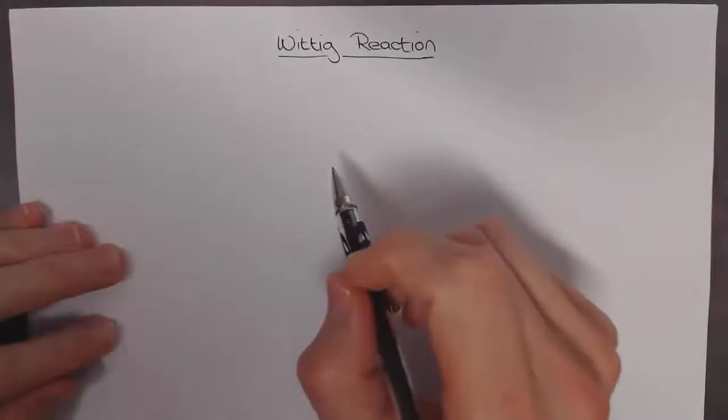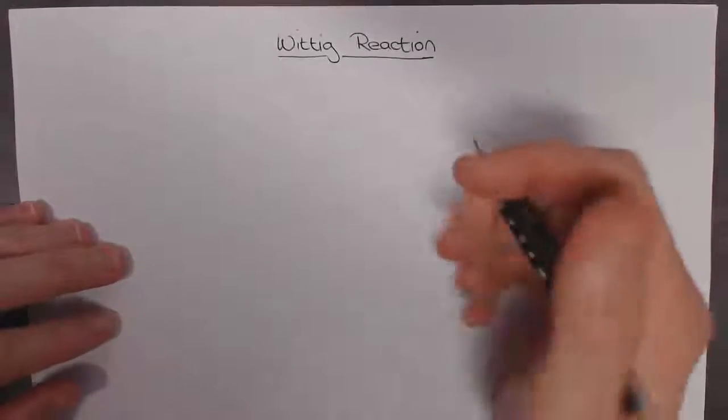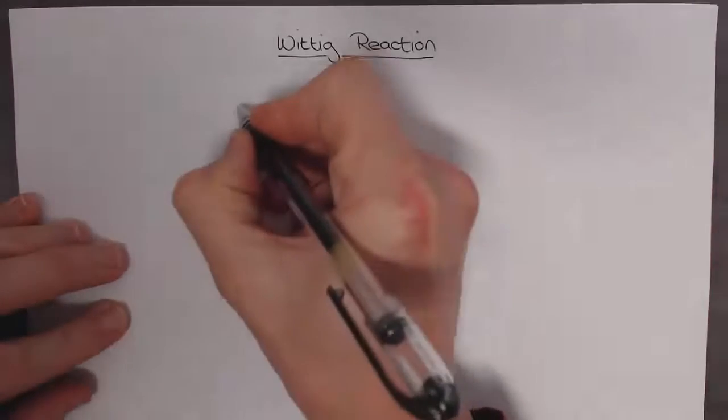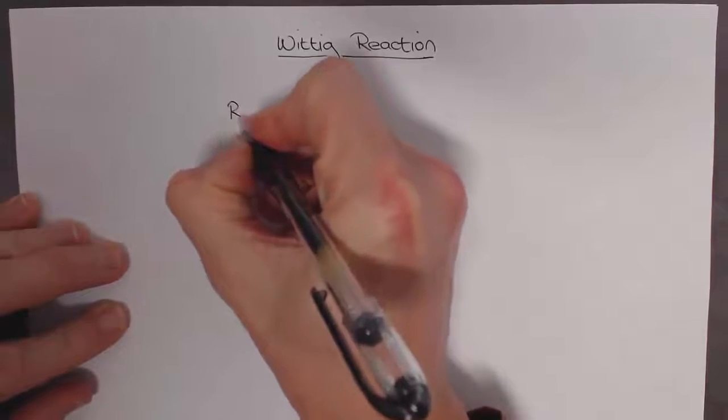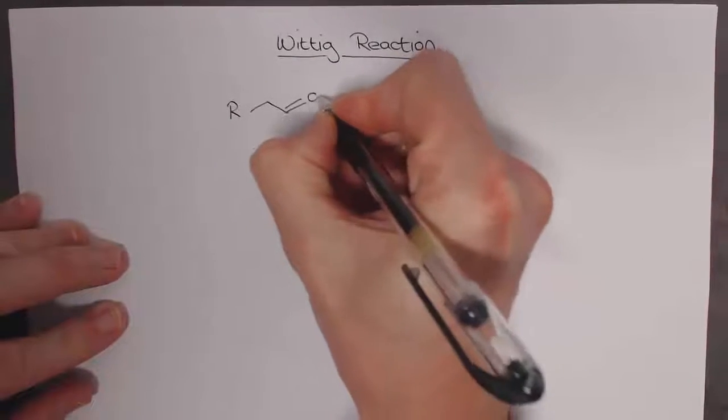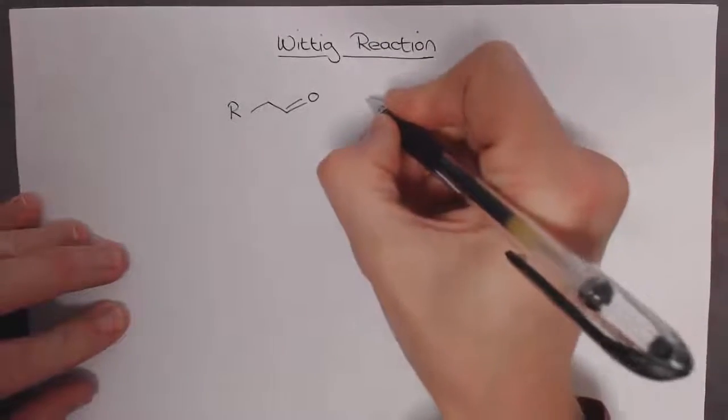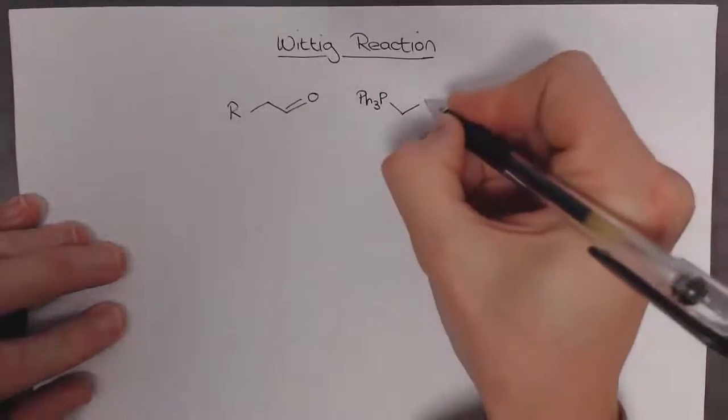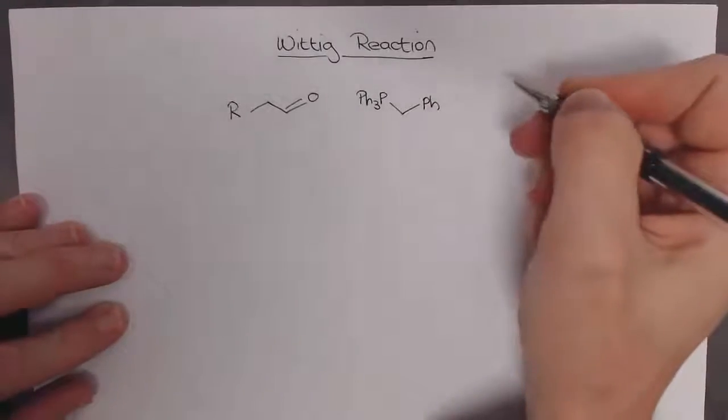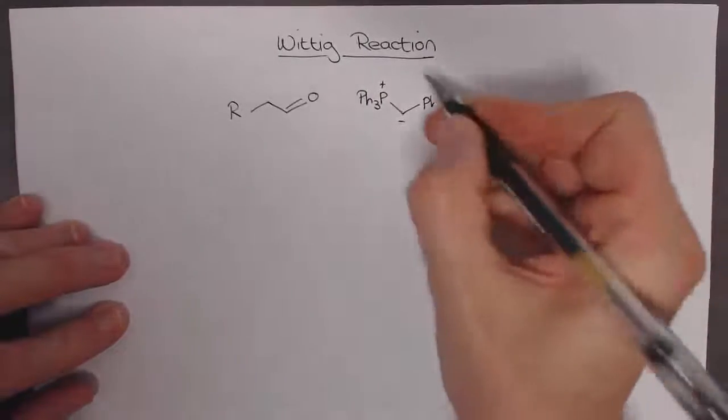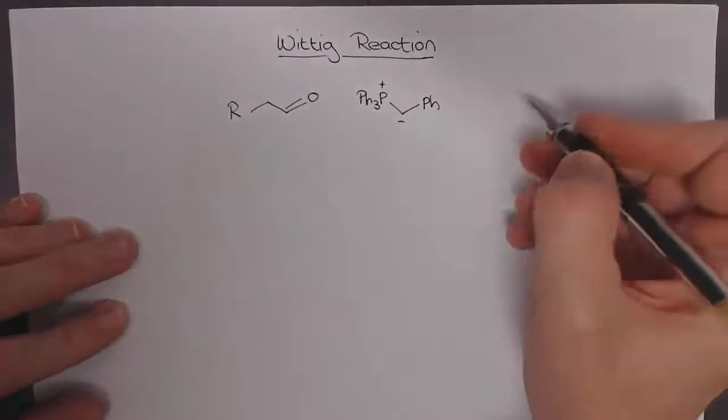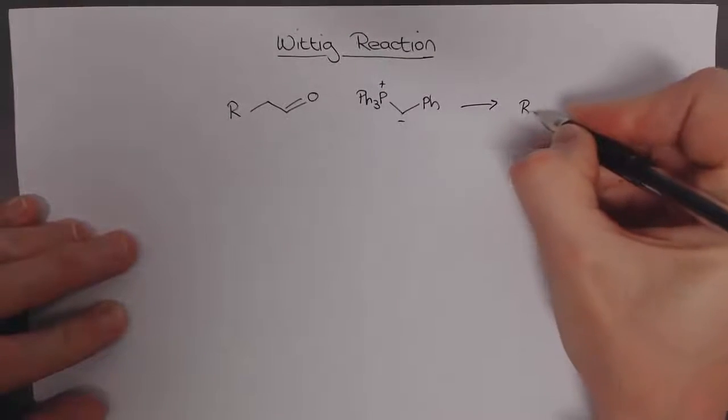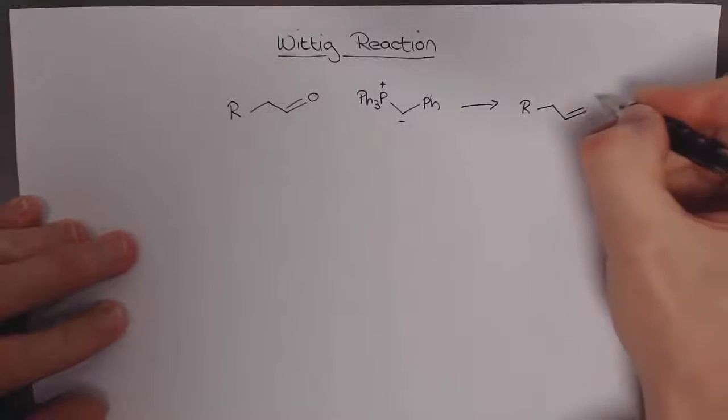That of the Wittig reaction that results in us getting carbon-carbon double bonds from aldehydes and ketones. The most simple example is if we take this aldehyde and a Wittig reagent which is a triphenylphosphonium salt with a phenyl group. When we mix the two together we get a product that will have a new carbon-carbon double bond.